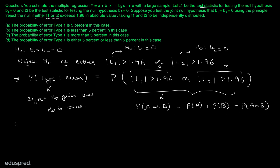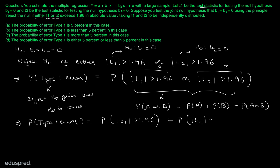Using this fact, I can write that the probability of Type 1 error equals the probability that |t1| > 1.96, plus the probability that |t2| > 1.96, minus the probability that both |t1| > 1.96 and |t2| > 1.96 simultaneously.